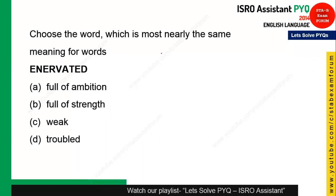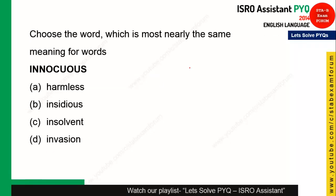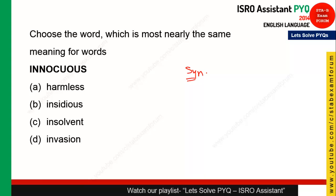In the 2014 exam, there were three synonym questions, so synonyms are very important. The next word is 'enervated' and you need to find its synonym. The answer is option C — 'weak.' Enervated means weak. The following synonym question has the answer option A — the word means harmless for your health.